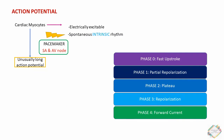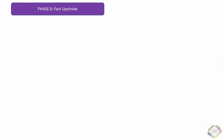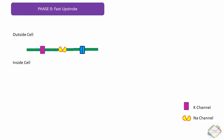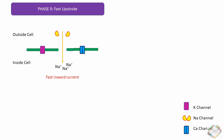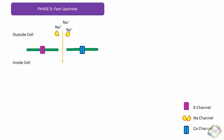In phase 0, the fast upstroke, the cell membrane consists of potassium, sodium, and calcium channels. The sodium channels get opened — these are the fast channels — resulting in a fast inward current. This upstroke ends when the sodium channels get rapidly inactivated.